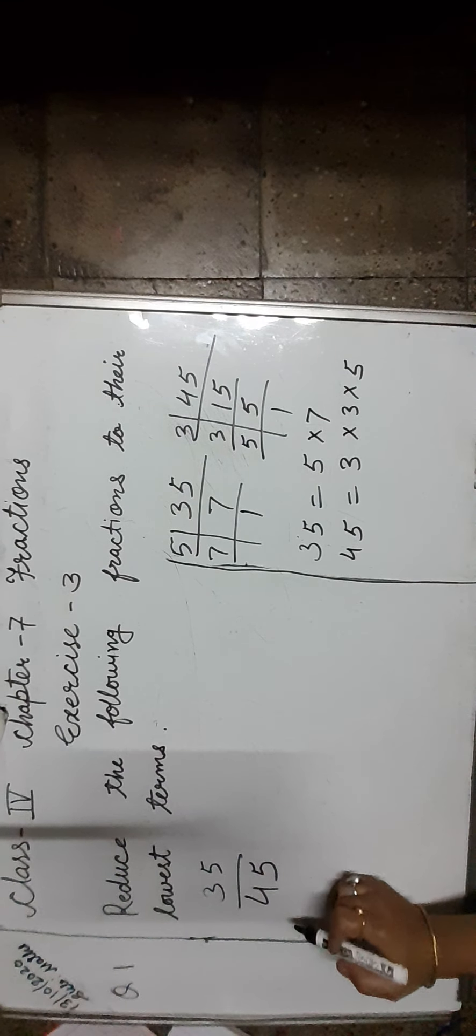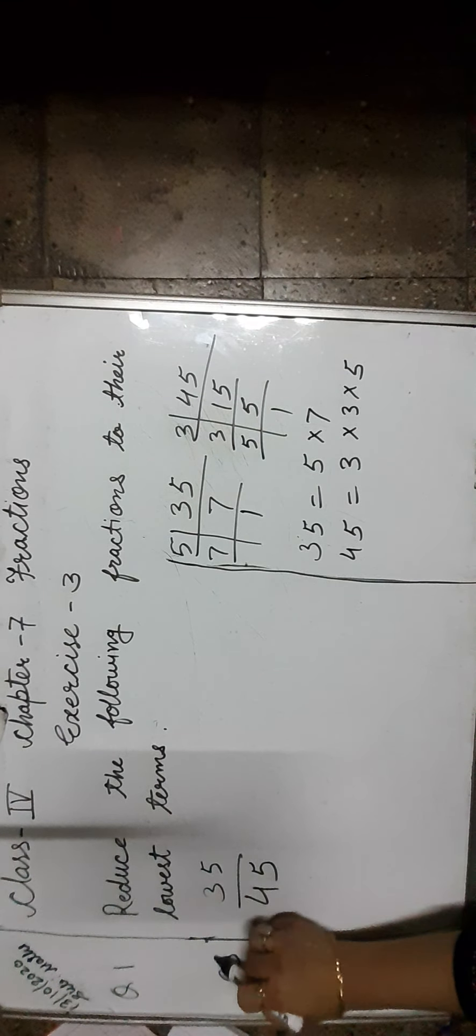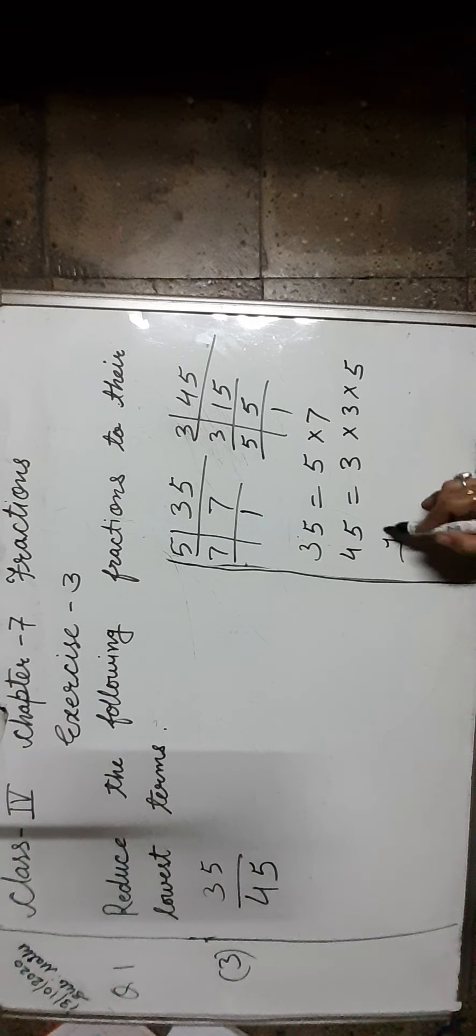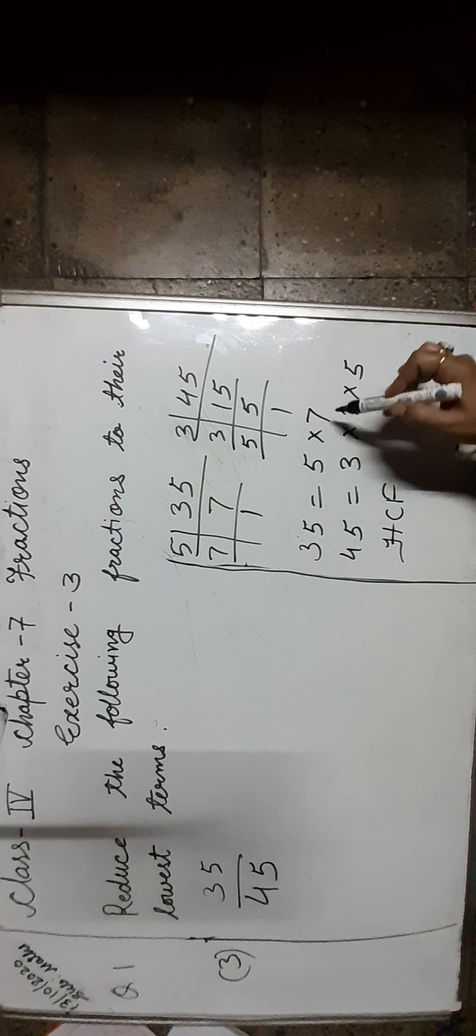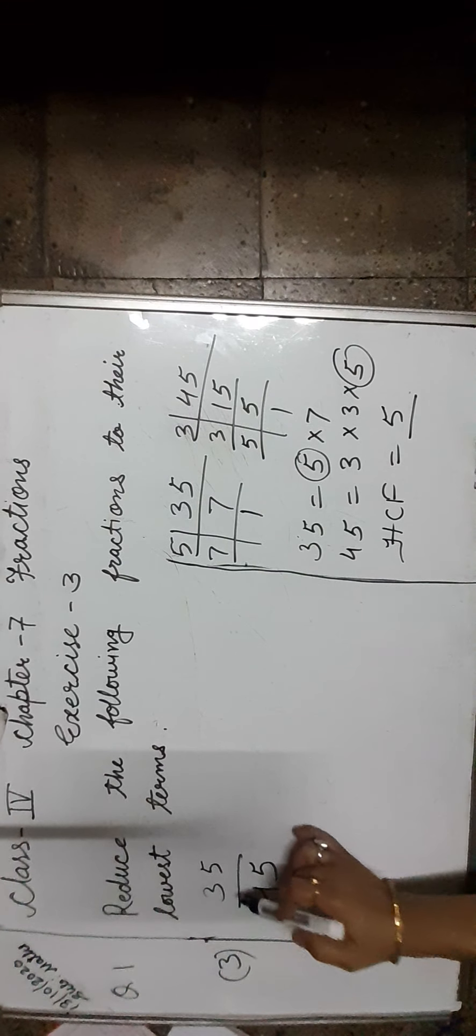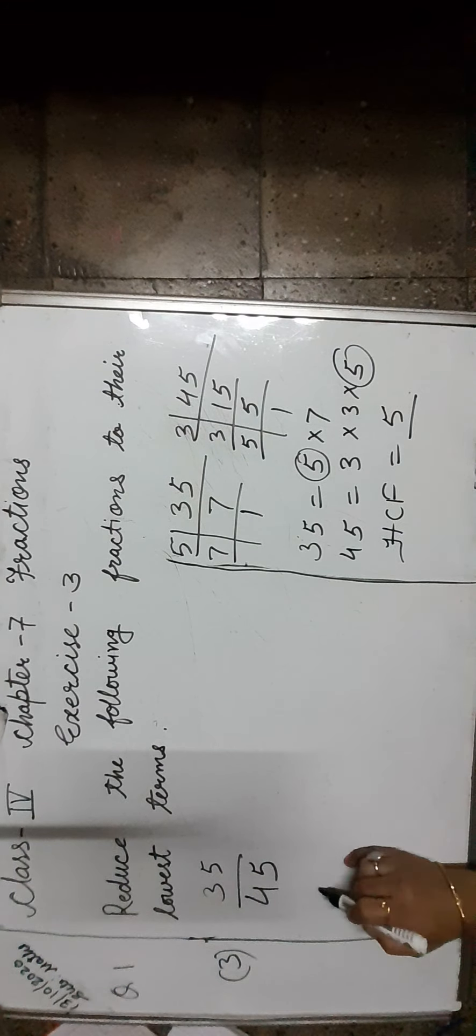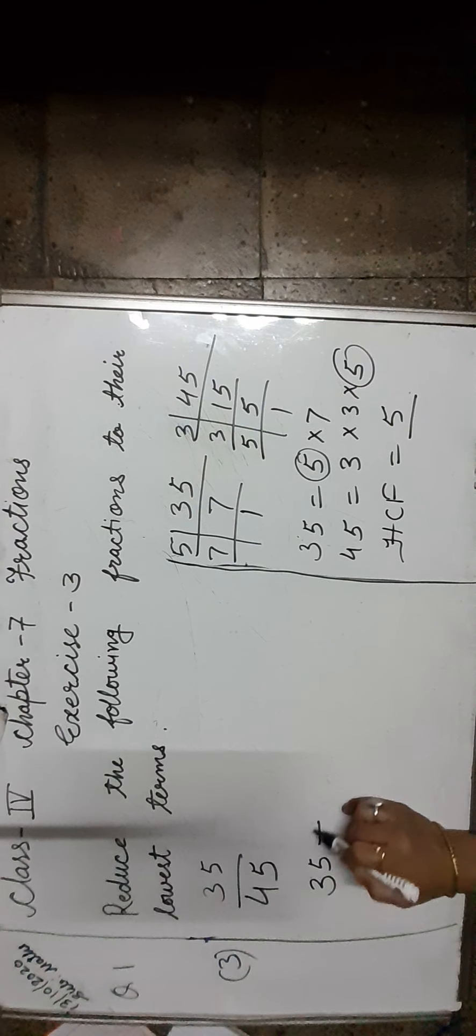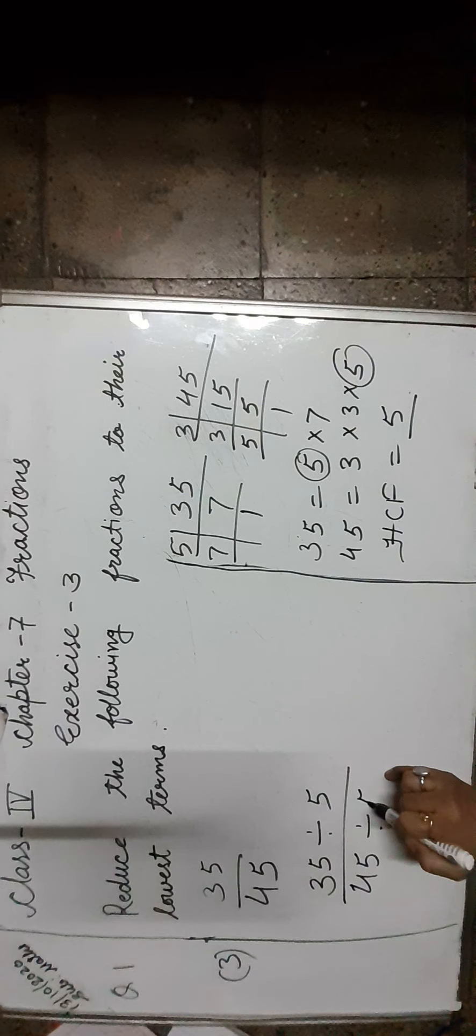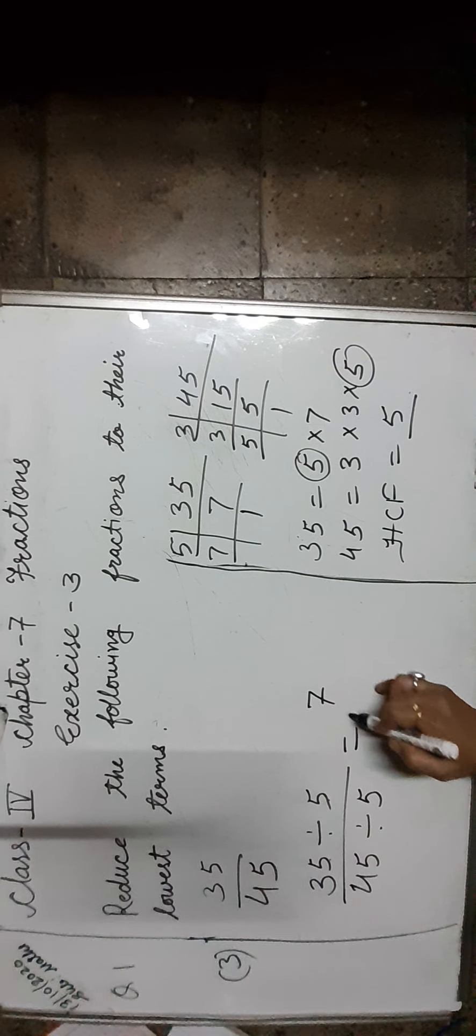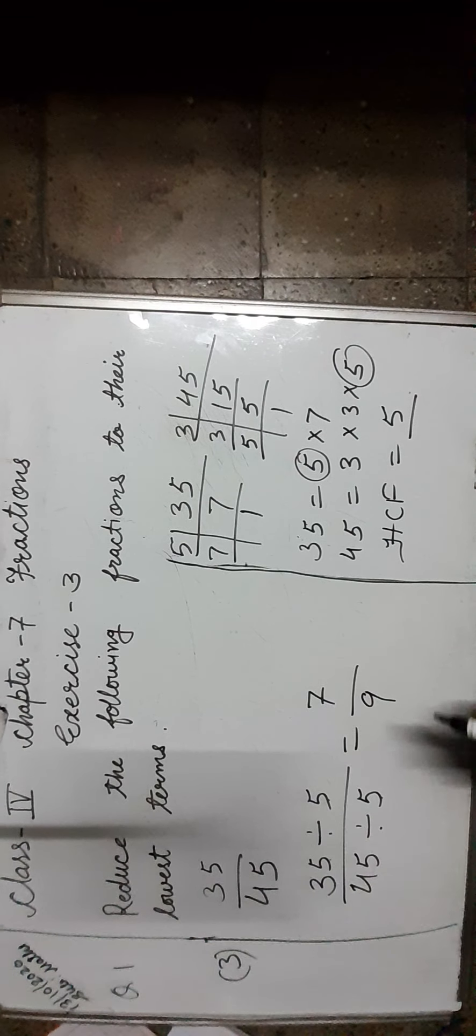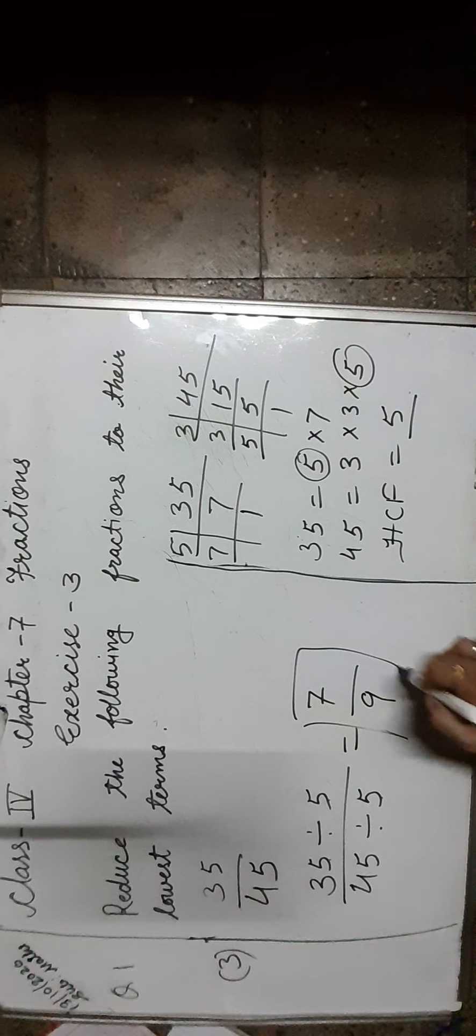Next one is 35 upon 45. Let us find the HCF of 35 and 45. The HCF of 35 and 45 is 5. Let us divide 35 and 45 by 5. 35 divided by 5 upon 45 divided by 5. 5 times 7 is 35, 5 times 9 is 45. So the lowest term of 35 upon 45 is 7 upon 9.